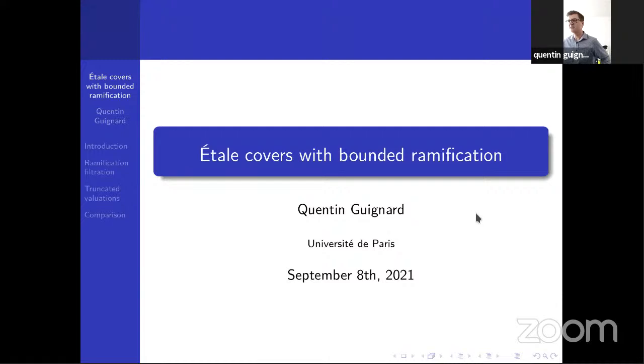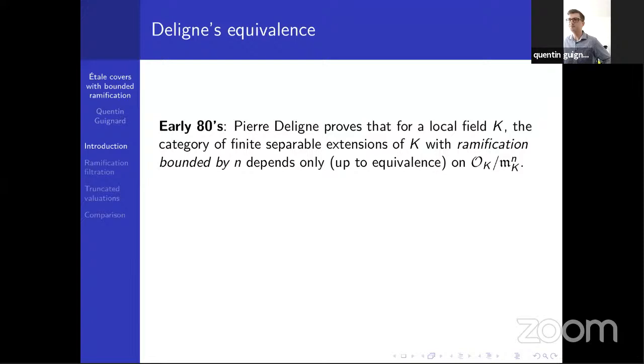Without further ado, I will delve right in. My main inspiration is a result of Pierre Deligne from the early 80s, which is as follows. If you take a local field K, or more generally a complete discrete valued field with perfect residue field, then if you fix some integer n, the category of finite separable extensions of K with ramifications bounded by n can be recovered from the residue ring, mod maximal ideal for n.